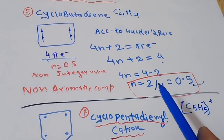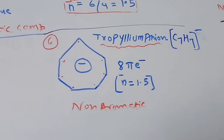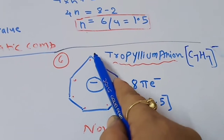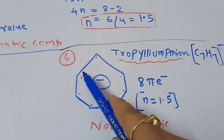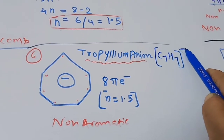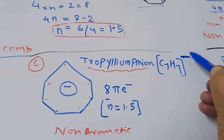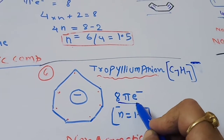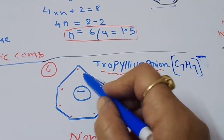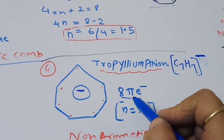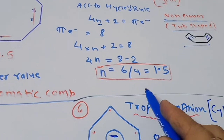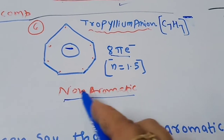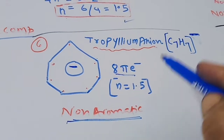The next example is the tropylium anion, formula C7H7 with a minus charge. The minus charge means one electron has been taken in. With 7 carbons each giving 1 electron for delocalization plus the extra electron, this is an 8 pi electron system. We already solved for 8 pi electrons: n = 1.5, a non-integer value. So tropylium anion is also non-aromatic and does not obey Huckel's rule.